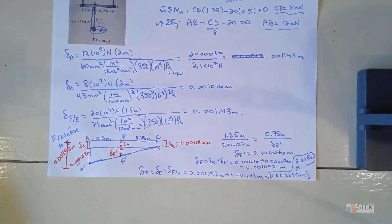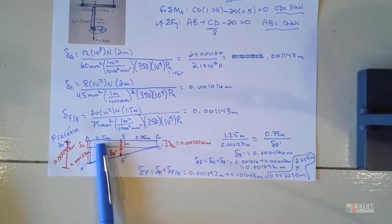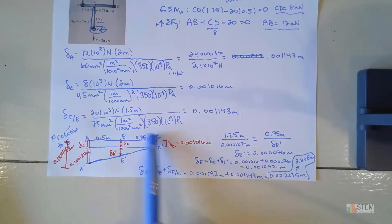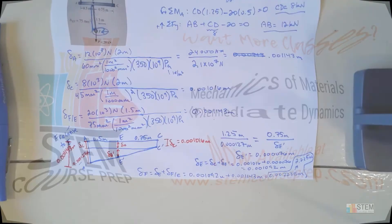The important thing to notice was that this was not symmetric. If both sides had 0.75 meters on each side of rod EF, the whole thing would have been symmetric and a bit simpler. But since it wasn't, you had to apply similar triangles here. See you guys next time.